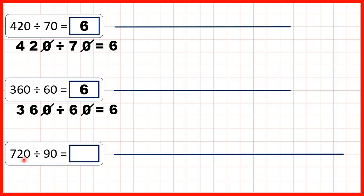Finally we have 720 divided by 90. Both numbers are multiples of 10 so we can cancel our end zeros and 72 divided by 9 is 8. So that's also our answer to 720 divided by 90.